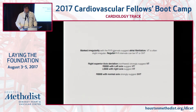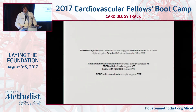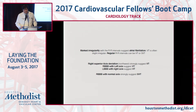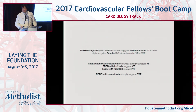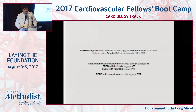Marked irregularity of the R-R interval suggests atrial fibrillation — it has to be marked. Slight irregularity could still be ventricular tachycardia. Regular R-R intervals could be SVT or VT. Right superior axis deviation — northwest axis — strongly suggests ventricular tachycardia. Right bundle with left axis suggests VT. Left bundle with right axis suggests VT. Right bundle with normal axis also suggests VT.